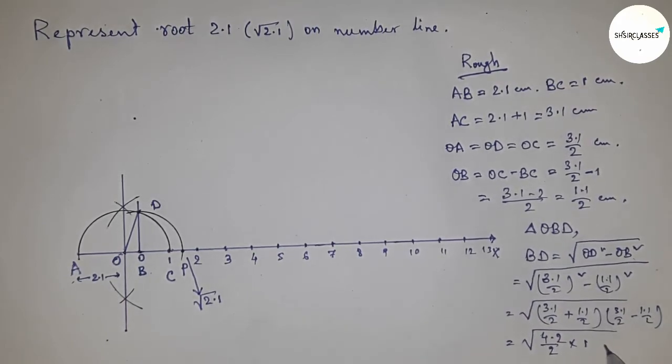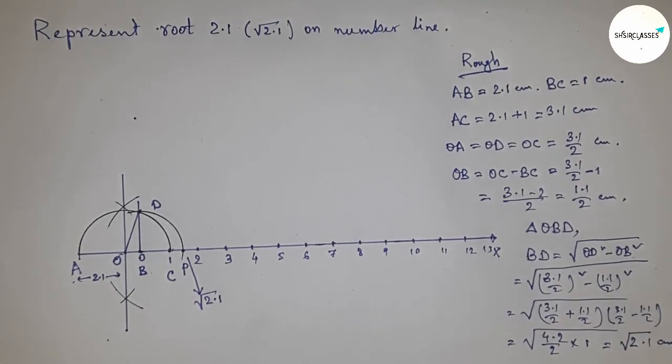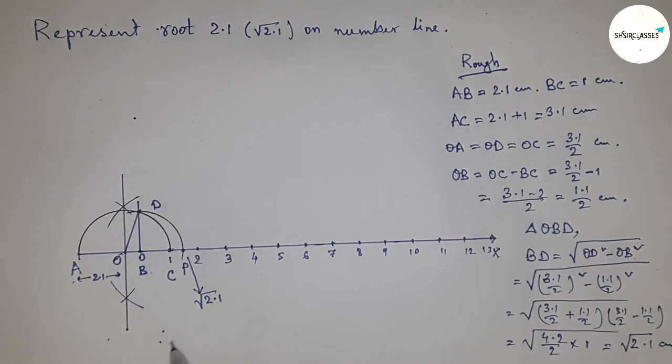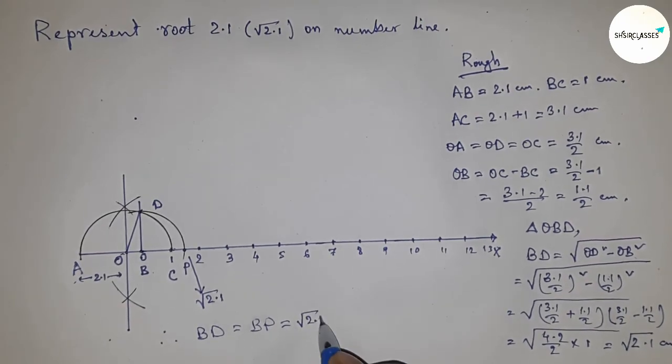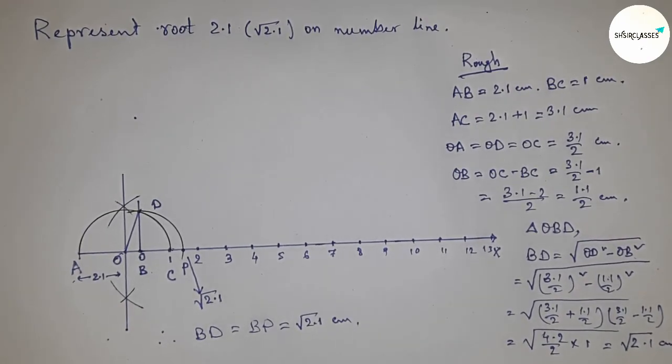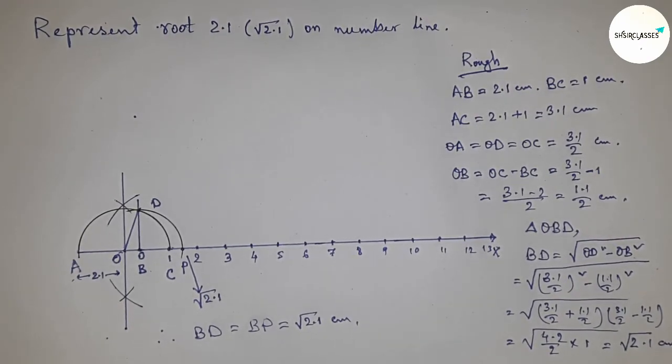Therefore, distance BD equals distance BP equals root 2.1 centimeters. That's all. Thanks for watching. Please subscribe, like, and comment on my video.